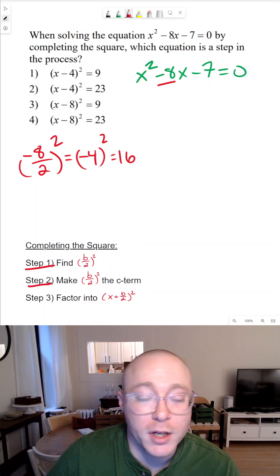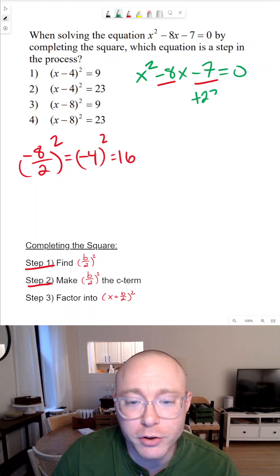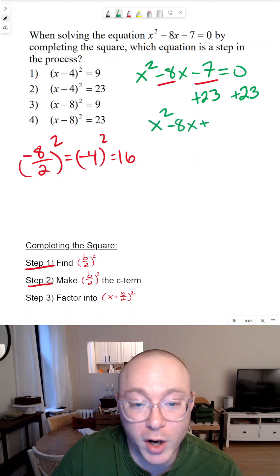Here's step two, make this number into the c term. We'll see here that we have a c term of negative seven. If we added 23, we should end up getting 16. So we'll now rewrite this.